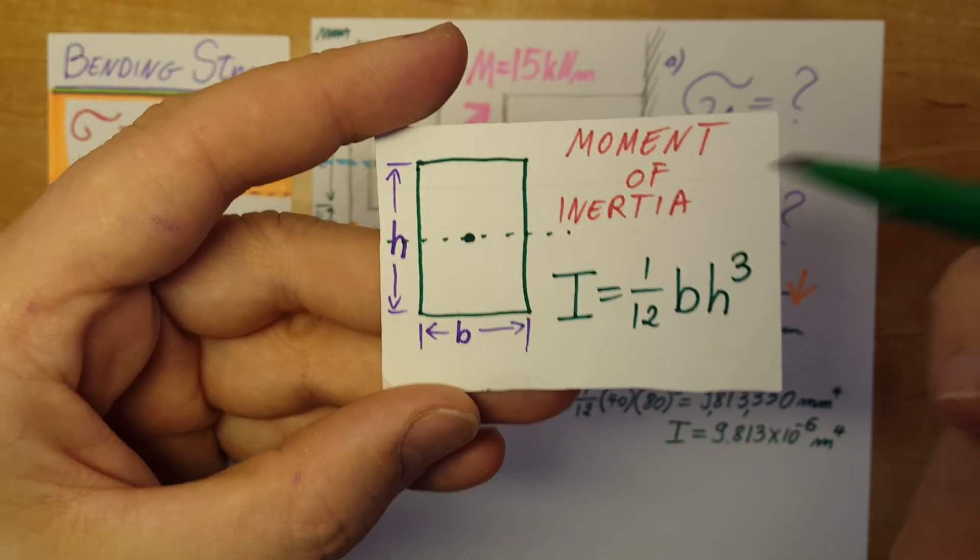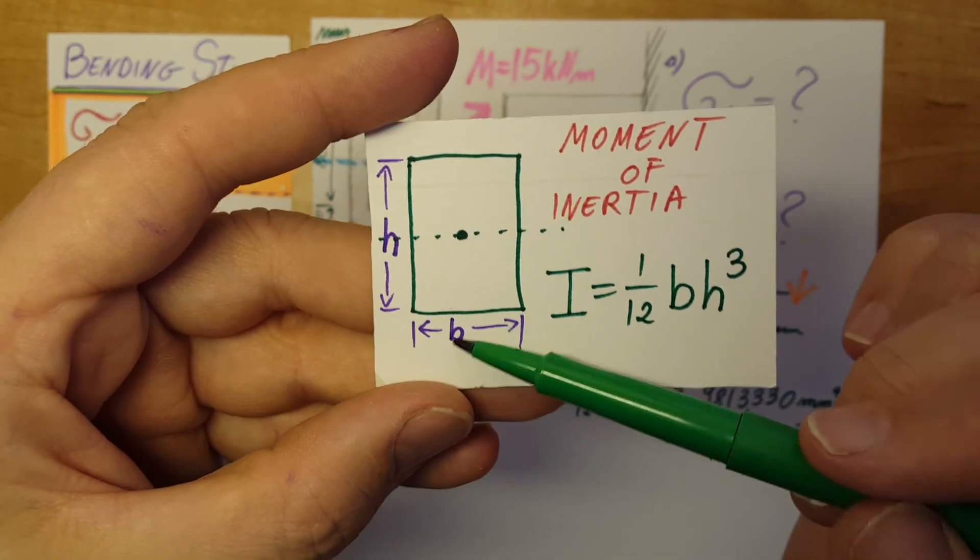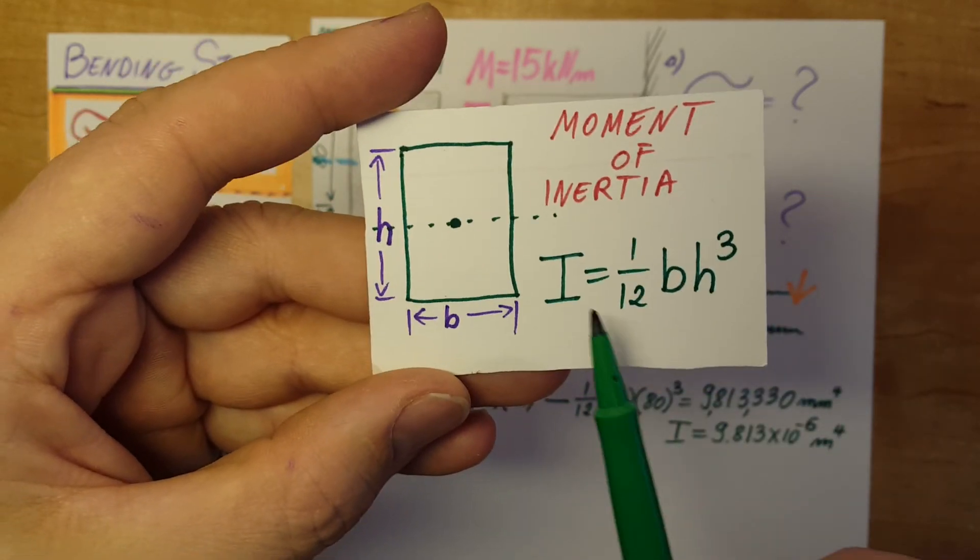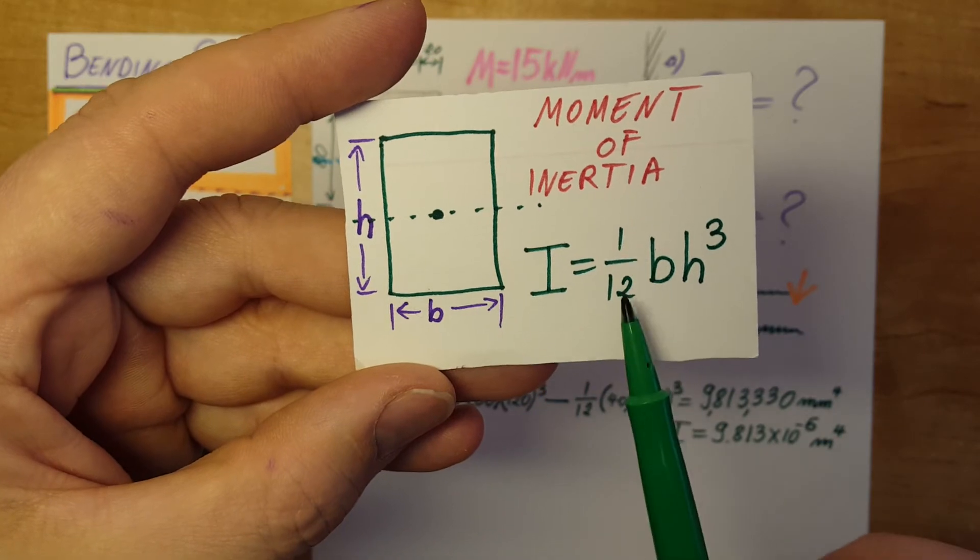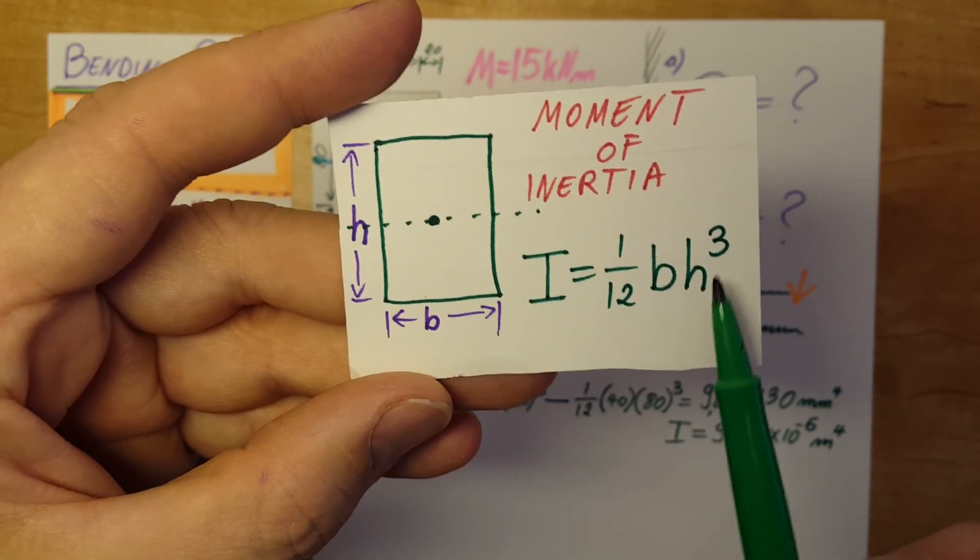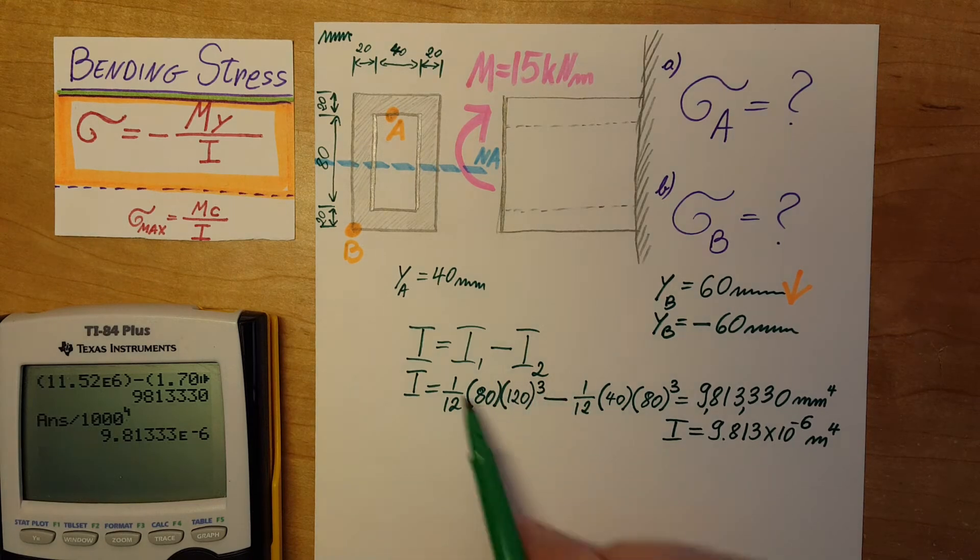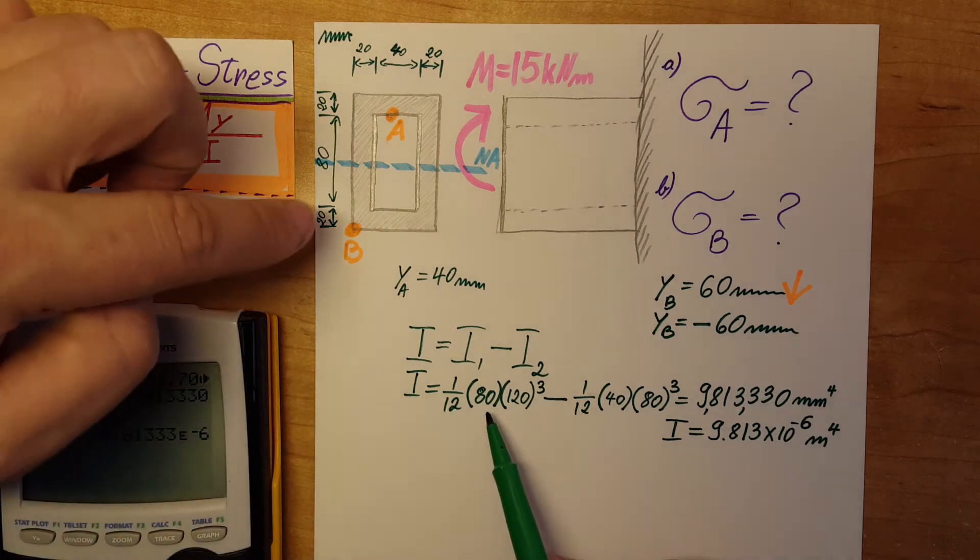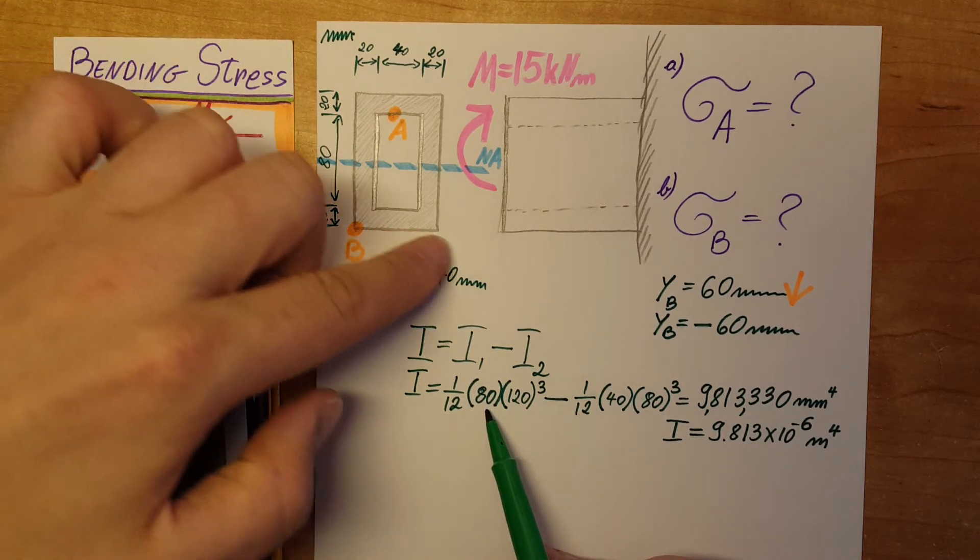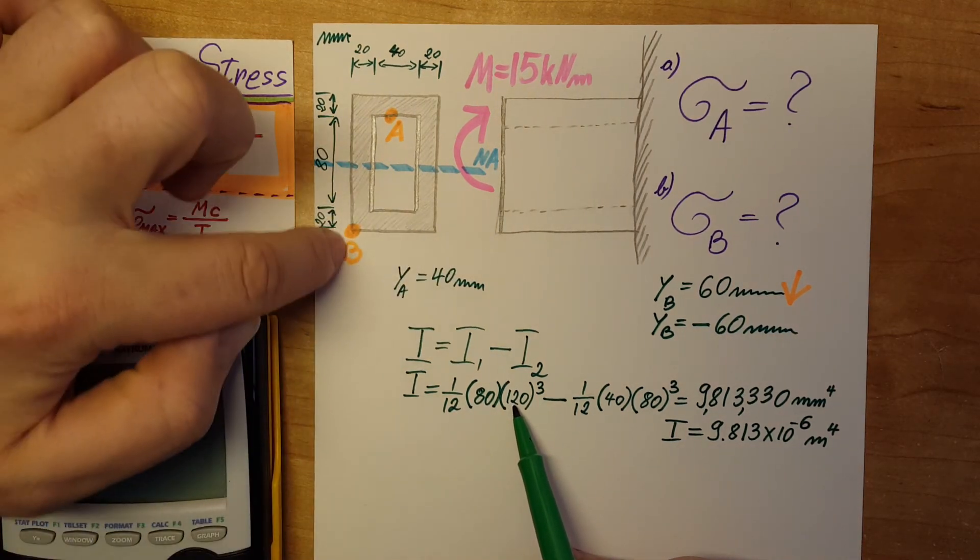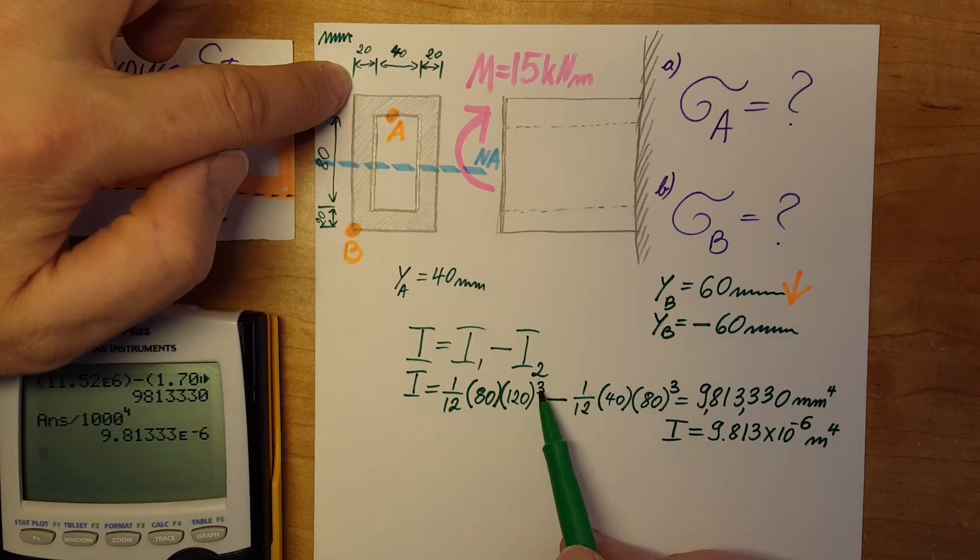Here's the formula for the moment of inertia for a rectangle, base height. The formula I equals 1 over 12 bh to the third. This is what I used. I plugged in the value for the big rectangle, 1 over 12, 80 for the base, 120 for the entire height to the cube.